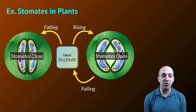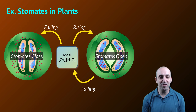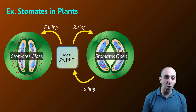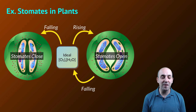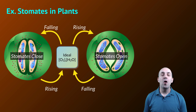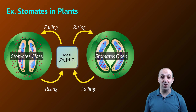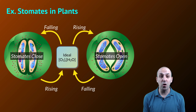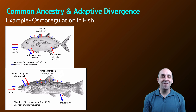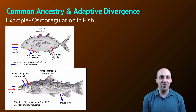Certainly this can go the other way as well. As those concentrations fall below the set point, the stomates will then close, preventing those substances from leaving the leaf and causing them to rise back up again. Once again, we see the oscillation around this steady state condition — another classic example of negative feedback homeostasis.